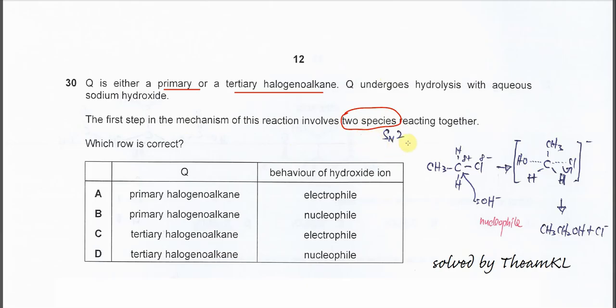Sn2 mechanism always starts with two species, so if you start with two species, it means Sn2. The first step here will involve the two species, which are the haloalkane and hydroxide. And Sn2 only happens to primary haloalkanes.